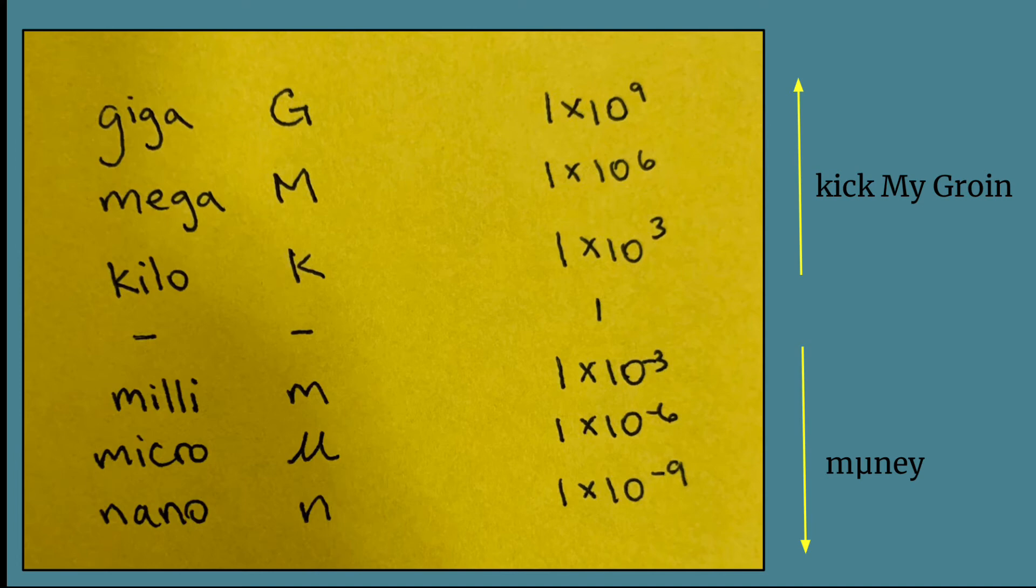And then going down a little bit smaller on the other side, we have the milli, the micro, and the nano. Also going down by increments of 10 to the third. And we can use the lowercase m, the Greek letter mu, and the letter n. So that's the whole thing. And to shorten that up, we can remember money. Money. We like money.